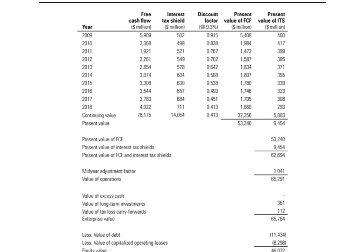You discount the free cash flows and the interest tax shields at a cost of equity — not a weighted average cost of capital — specifically an unlevered cost of equity, which is a higher discount rate that makes the cash flows worth a little less. That gets you a present value of the free cash flows and a present value of the interest tax shields. You also forecast those in the continuing value. When you add those two present values up, you get the same operating value for the firm — if you use the methods and do it correctly, you actually get the same value.